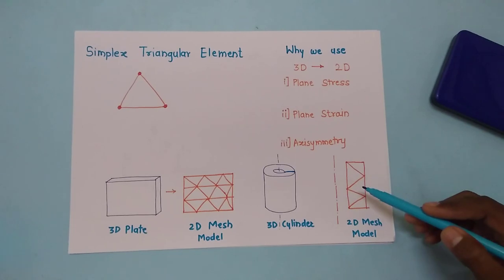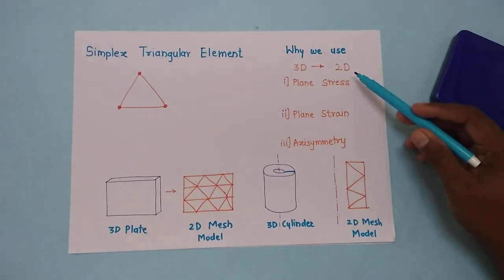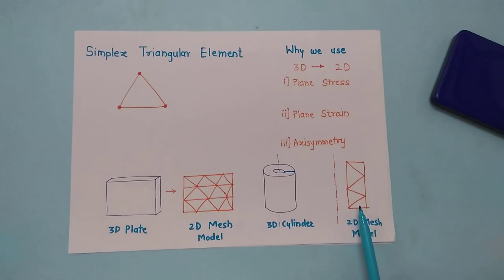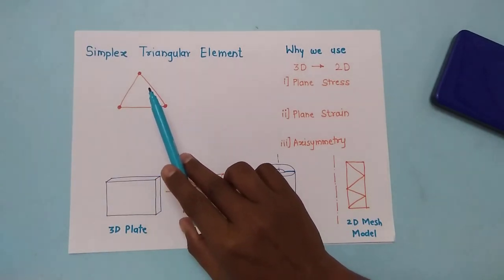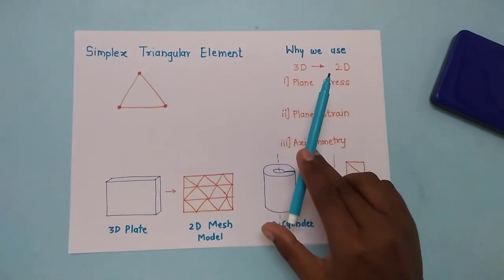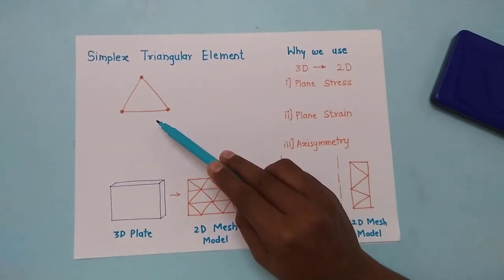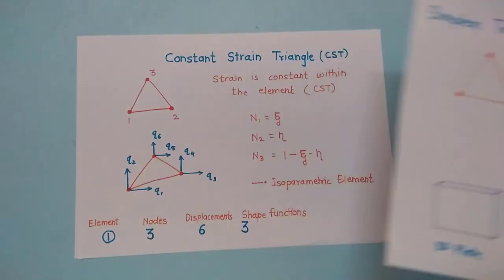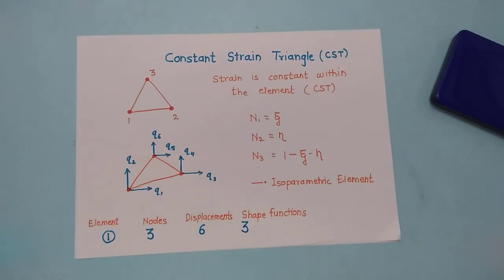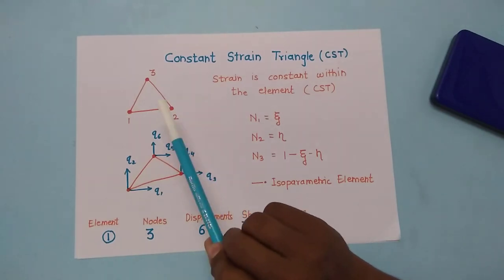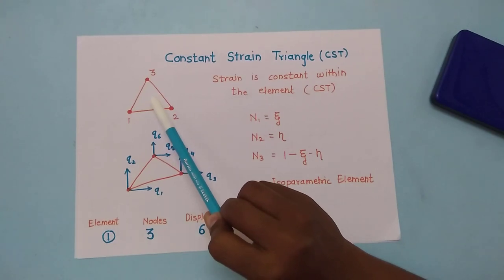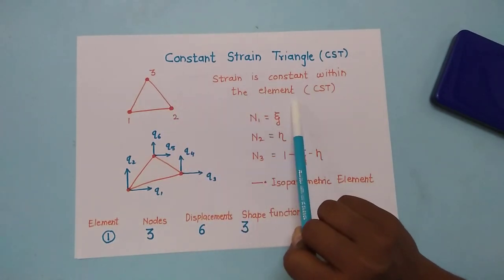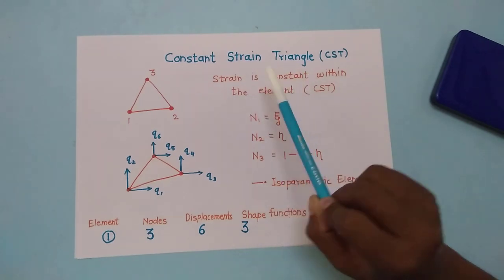While meshing to convert into elements and nodes for two-dimensional problems, we use simplex triangular elements. This triangular element has three nodes and is also called a constant strain triangle, because the strain within the element and at the end points is constant throughout the element.